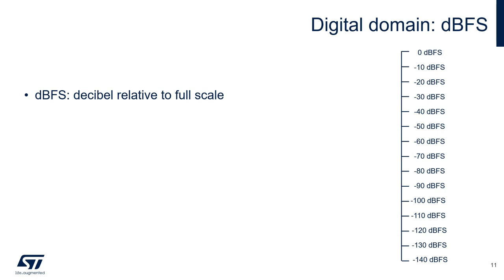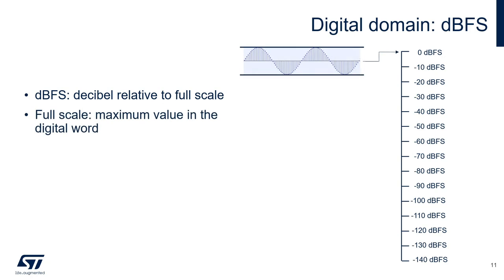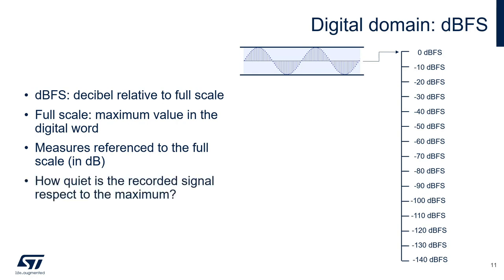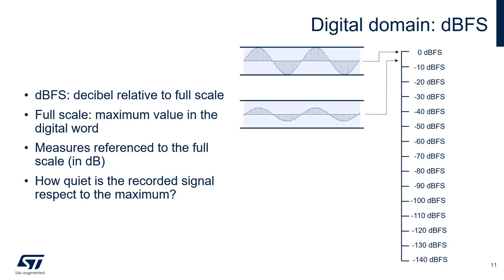dBFS is decibels relative to full scale, and it measures the amplitude levels in digital systems. The full scale is the maximum value that you can represent by a digital signal without saturation. This will be our reference value, and it will correspond to 0 dBFS. In this scenario, the amplitude of a signal can be represented as the ratio between the measured value and the full scale. You can think of this as a measure of how much quieter the signal is with respect to the maximum value represented in this digital domain. Here are some examples of digital signals and their dBFS values: minus 6 dBFS, minus 12 dBFS, and minus 20 dBFS.